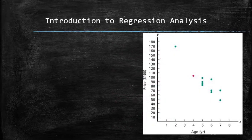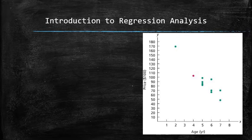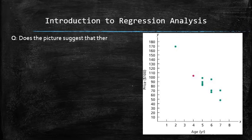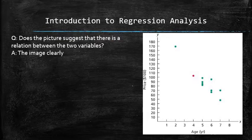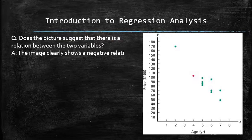Next, let's answer some questions about a possible relation between the two variables. Does the picture suggest that there is a relation between the two variables? Yes, the image clearly shows a negative relation because as the age increases, the price decreases.